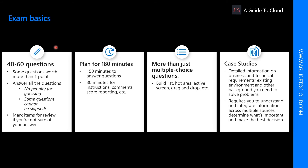Some exam basics you need to be aware of: if you are sitting for a Microsoft exam for the first time, you are very likely to get between 40 to 60 questions. Some of these questions are worth more than one point. There is no penalty for guessing, so answer all the questions. You can review questions and go back after completing a section. In total, you would be getting 180 minutes, so plan accordingly for answering, reviewing, and reporting.